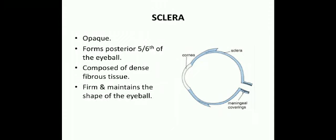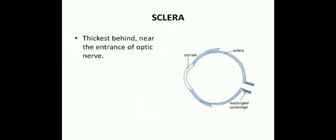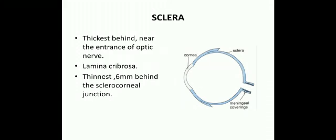The sclera is composed of dense fibrous tissue, is firm, and maintains the shape of the eyeball. It is thickest behind, near the entrance of the optic nerve. On the other side of the optic nerve entrance it is weak, and the surrounding area has a number of perforations through which the optic nerve fibers enter, giving a sieve-like appearance. This area is termed the lamina cribrosa.